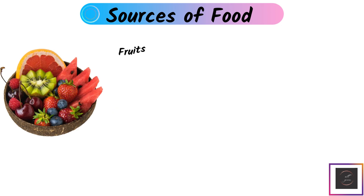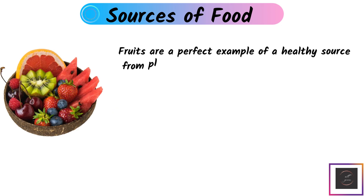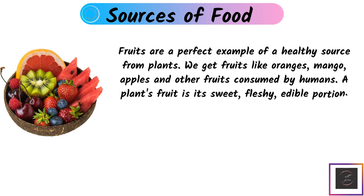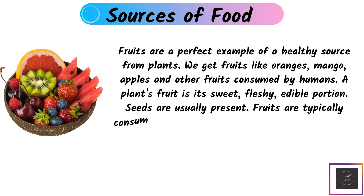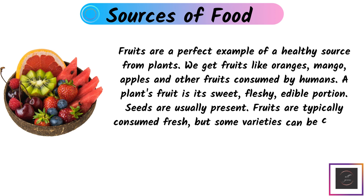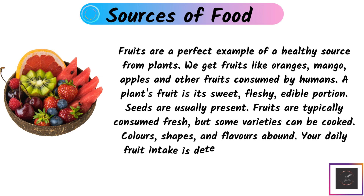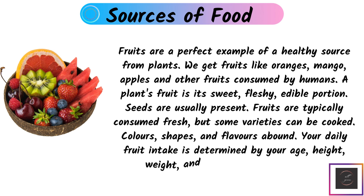Fruits: Fruits are the perfect example of healthy sources from plants. We get fruits like oranges, mangoes, apples, and other fruits consumed by humans. A plant's fruit is its sweet, fleshy, edible portion, and seeds are usually present. Fruits are typically consumed fresh, but some varieties can be cooked. They are abundant in color, shape, and flavor. Your daily fruit intake is determined by your age, height, weight, and level of physical activity.